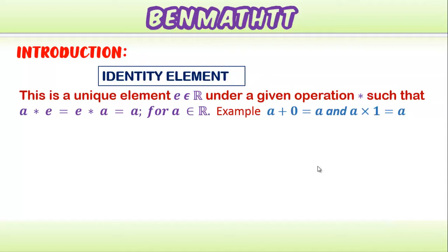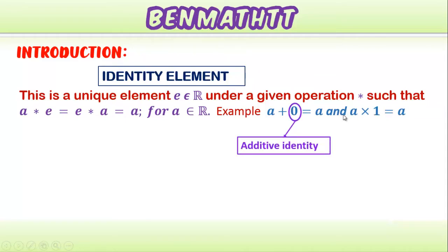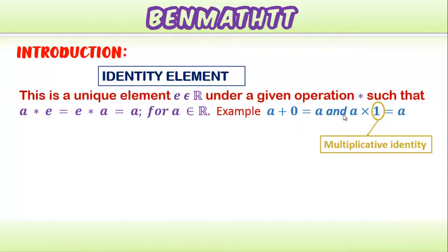When we talk about an identity element, we are looking at a unique element e from R, such that when you operate it on any element a, you get back a. For all a from R. When you add any number to zero you get back that number, and when you multiply a by one you get back a. So zero is the additive identity and one is the multiplicative identity.